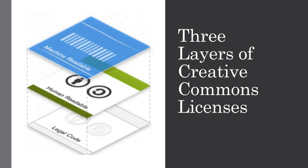Think of it as the SparkNotes version of the legal code. Finally, the third layer is the machine-readable version of the license, which means that search engines and web crawlers can find and identify works that have been licensed under a Creative Commons license.